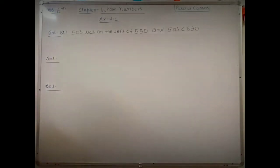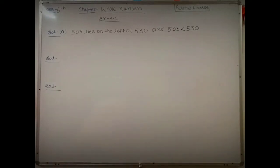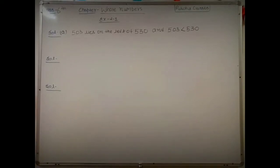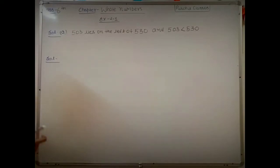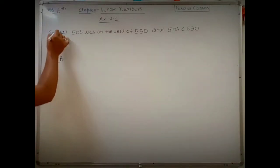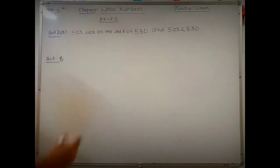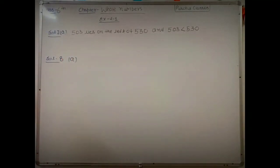The remaining pairs in Question 7 you will solve yourself. Now Question 8 is in the form of true or false, and most concepts have been covered previously. Part a says: 0 is the smallest natural number.